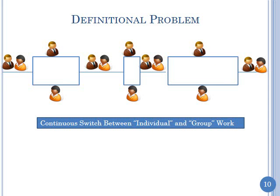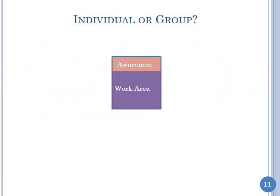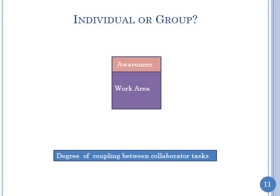We also run into a definition problem: what exactly is individual work and what is group work? Looking at a picture with a small awareness area and large work area, it's possible to do your own work while through peripheral vision seeing your partner's work and commenting on it. Is that individual work or group work? This seems to indicate we don't have two discrete modes — we perhaps have a continuous coupling degree between tasks.